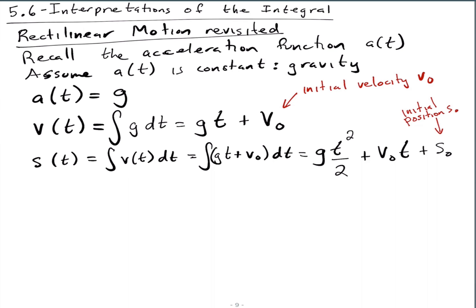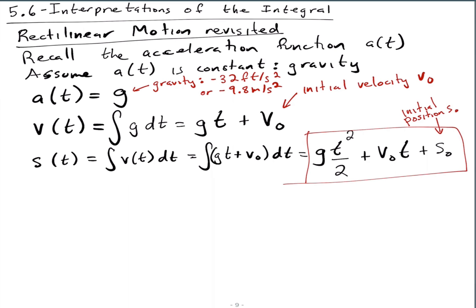Here we should put in gravity — let's say minus 32 feet per second squared, or minus 9.8 meters per second squared. So this is the position of a free-falling object. Way back when I gave you this function and we said 'where did that come from?' — well, now you know. It comes from the antiderivative: starting with constant acceleration, take its antiderivative to get velocity, then take the antiderivative again to get position.